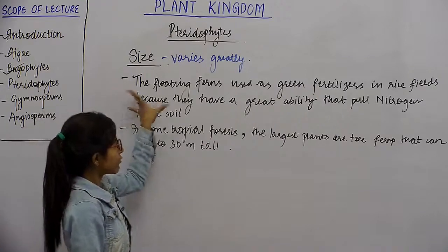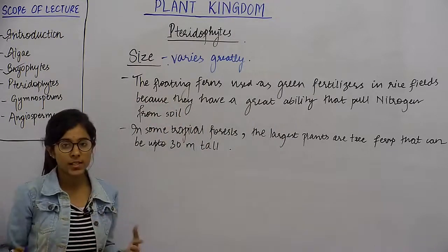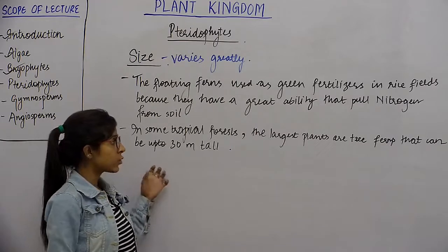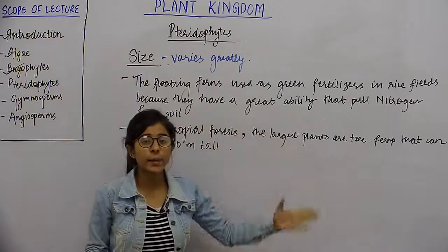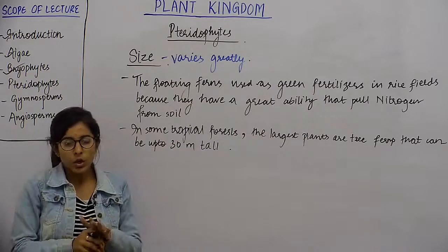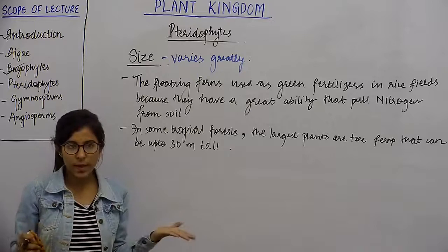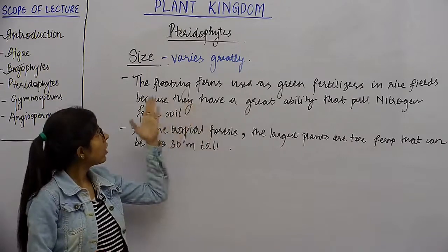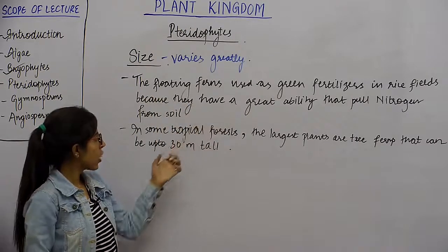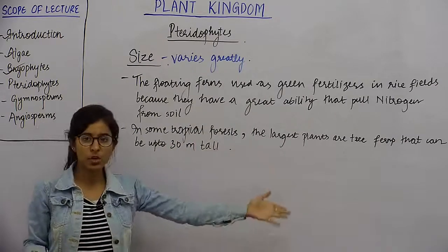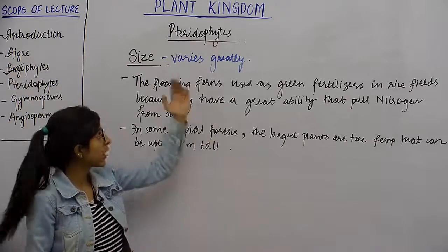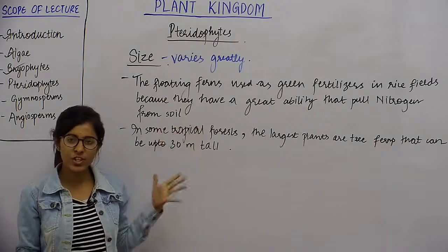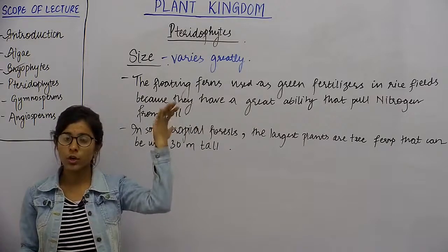For example, kuch floating ferns hota hai jinko as green fertilizers use kiya jata hai in the rice fields. Inko isi liye use kiya jata hai because they have a great ability to pull nitrogen from the soil and give it to the plant. Their size varies from tiny fertilizers to the largest plants in tropical forests, which are tree ferns that can be up to 30 meters tall.